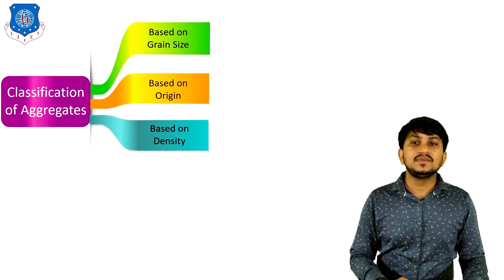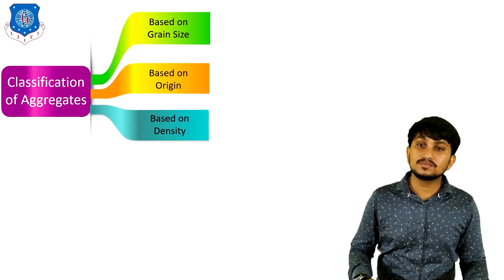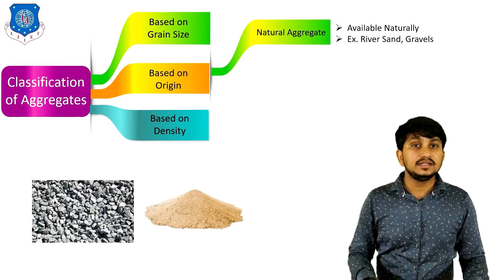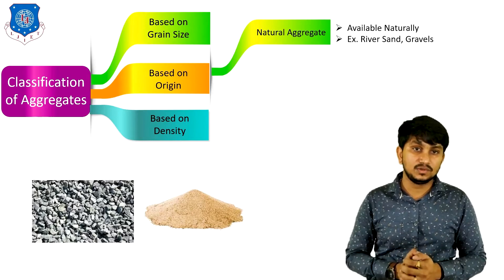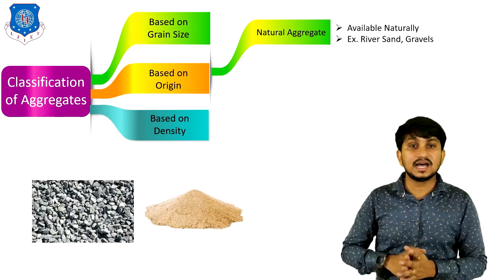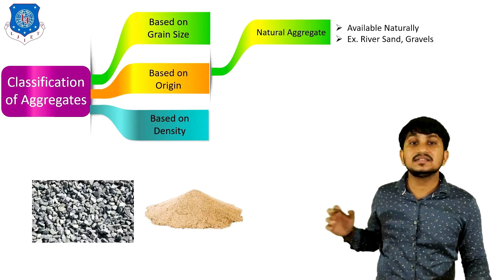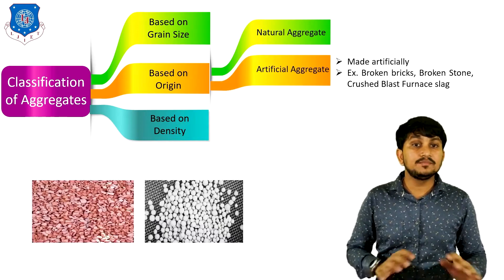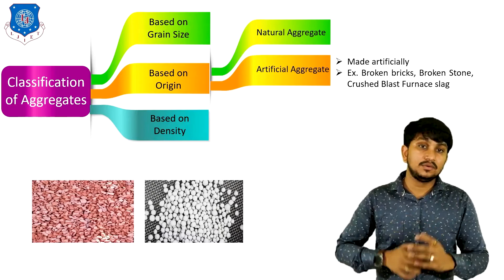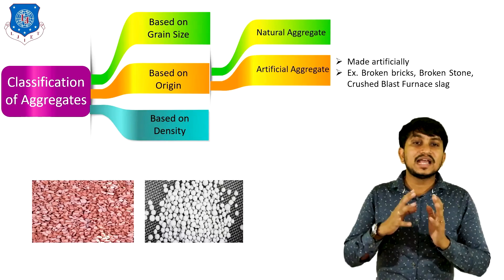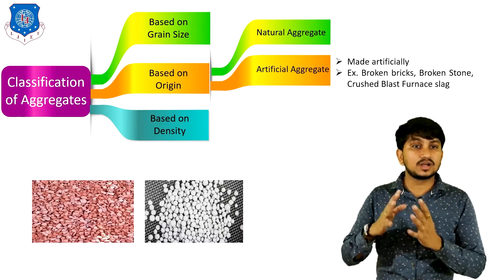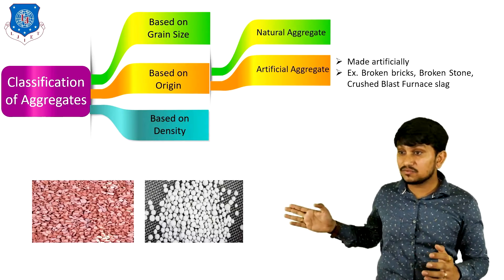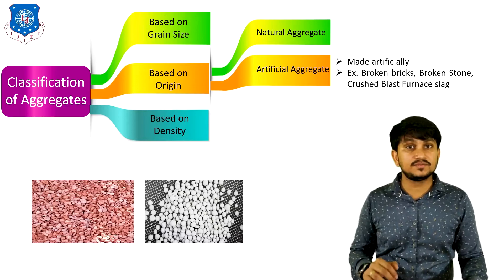Classification of aggregates based on origin: the first type is natural aggregates, which are naturally available. Examples of natural aggregates are river sand and gravels. The second type is artificial aggregates, which are made artificially in factories. Examples of artificial aggregates are broken bricks, broken stone, crushed blast furnace slag, and sintered fly ash.